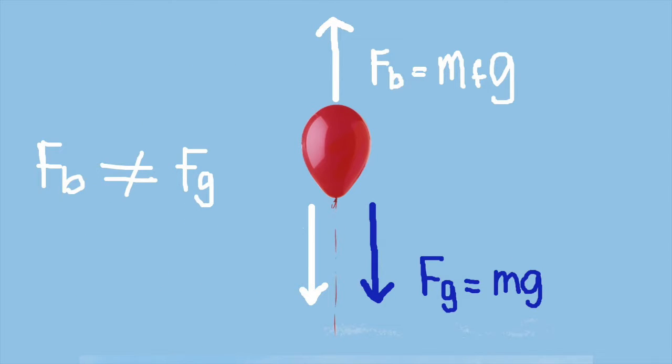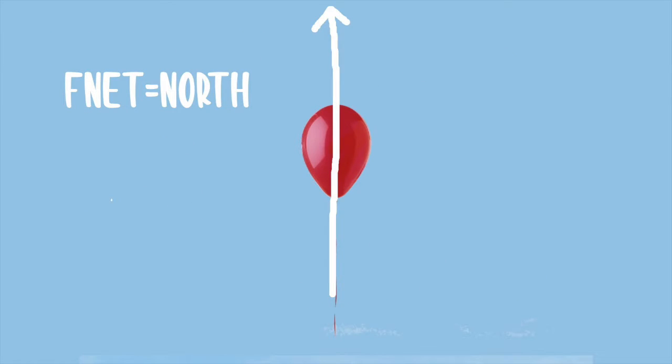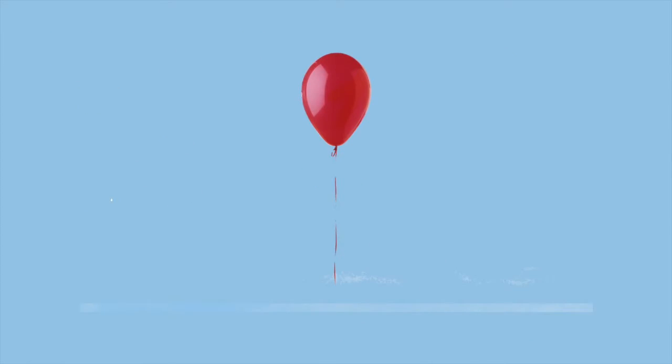However, it is important to remember that gravity is its own separate force in this diagram. So if we compare the upward and downward force on the vertical axes, the buoyant force is greater than gravity pulling it down. The net force then points upward, thus allowing the balloon to accelerate.